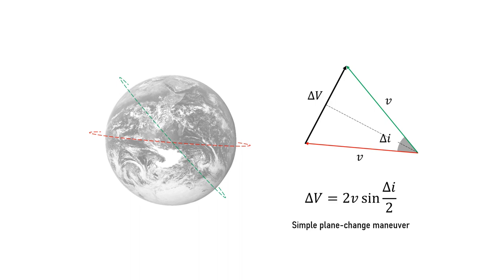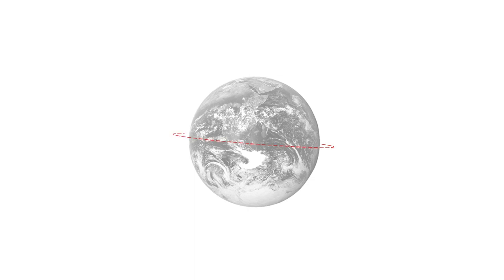A single plane change, also called a cranking maneuver, is very expensive in terms of the velocity change required. Try this on your own: if the change of inclination needed is 60 degrees, the amount of delta-v needed is equivalent to the orbital velocity itself. And that is huge.